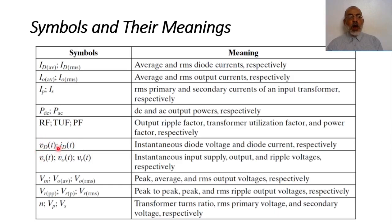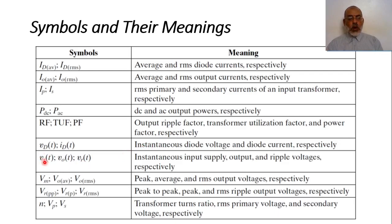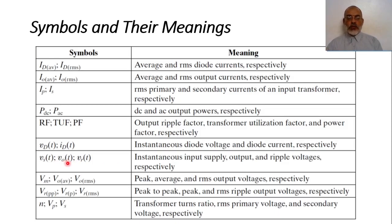Lowercase v and i are used for time-varying components. So v_d as a function of t is the time-varying voltage on the diode, or instantaneous voltage at the diode. Lowercase i_d as a function of t is the instantaneous current on the diode. Lowercase v_s of t is the instantaneous supply voltage, or secondary voltage, as a function of time. V_O of t is the instantaneous output voltage as a function of time.